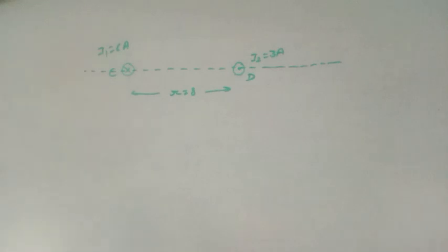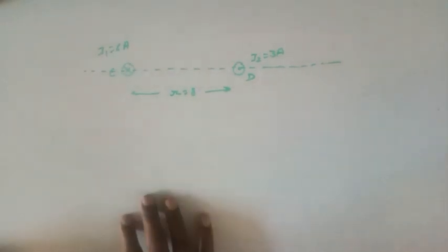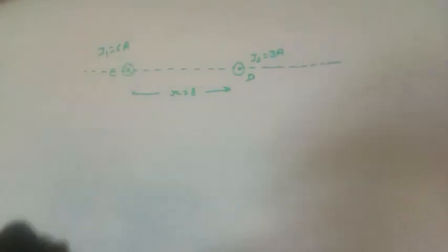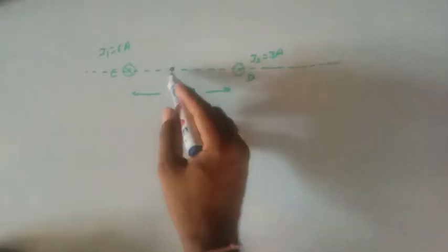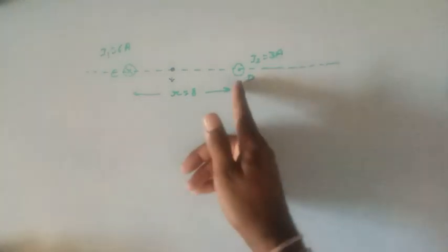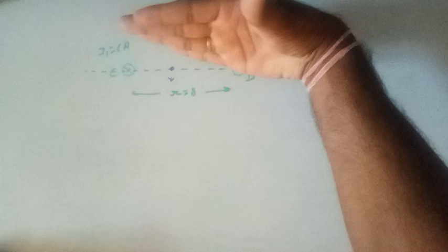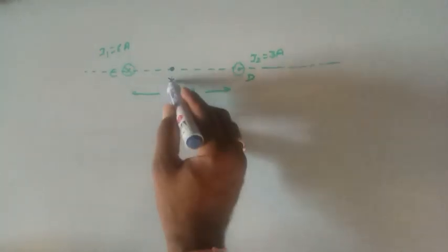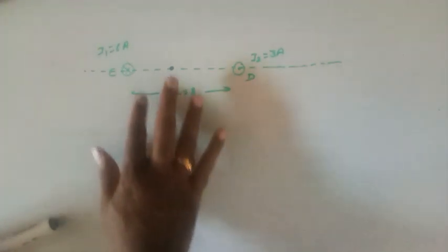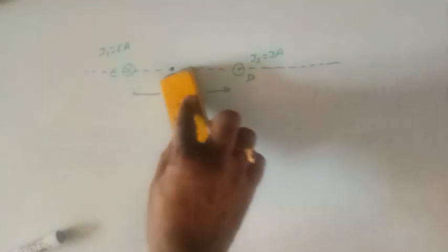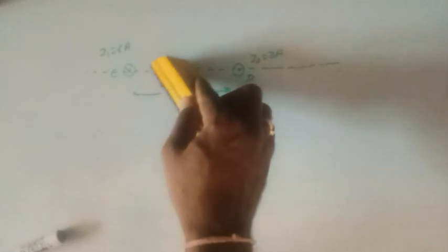We need to find the point where the magnetic field is zero. For conductor C, current is in the inward direction — using the right-hand rule, the magnetic field at any point between them would be in the downward direction. For conductor D, current is outward — the magnetic field is also downward at points between them. Therefore, B₁ and B₂ are both in the same direction between the conductors, so no point between them can have zero net field. The required point must be outside (beyond) the line joining the two conductors.